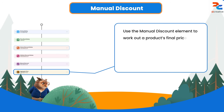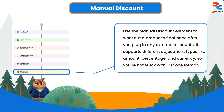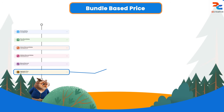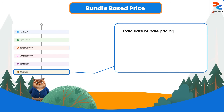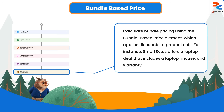The manual discount element calculates the final price after you manually enter a discount externally — when editing a quote line, you can apply adjustment types such as amount, percentage, or currency. There is also the bundle-based price element, which calculates bundle pricing by applying discounts to product sets. For instance, a laptop deal bundling a laptop, mouse, and warranty at a discounted price is handled by the bundle-based price element.